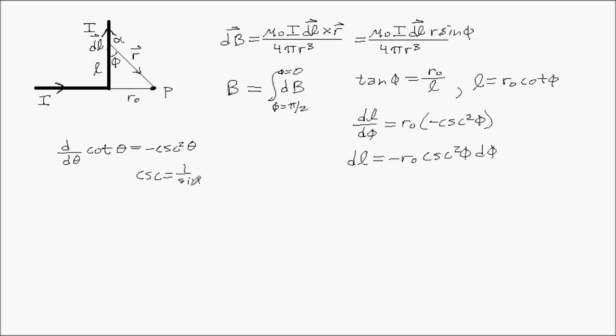Now that's nice. I just got rid of dl, and I just have phi. But I still got r in there. Watch this. Since cosecant is one over sine, this is squared. So it's one squared over sine squared. If sine of phi is opposite over hypotenuse, then one over sine would be r over r naught. So this would be hypotenuse over opposite, which equals r over r naught. So now we have dl equals negative r naught r squared over r naught squared d phi, which simplifies to dl equals negative r squared d phi over r naught.